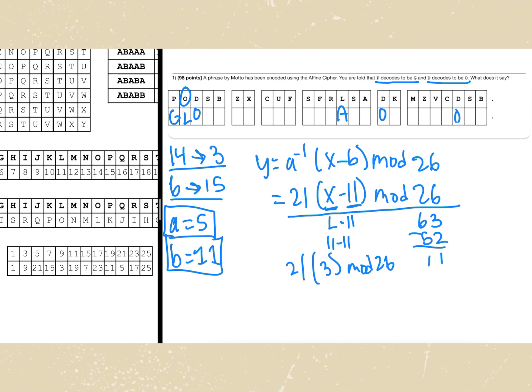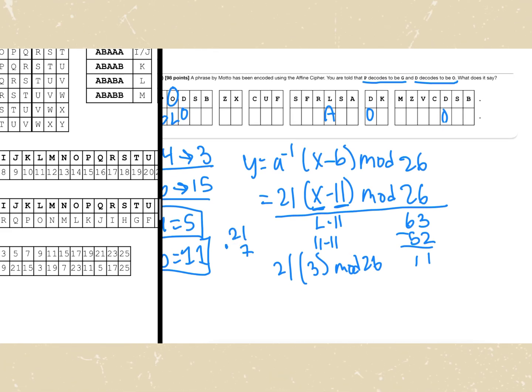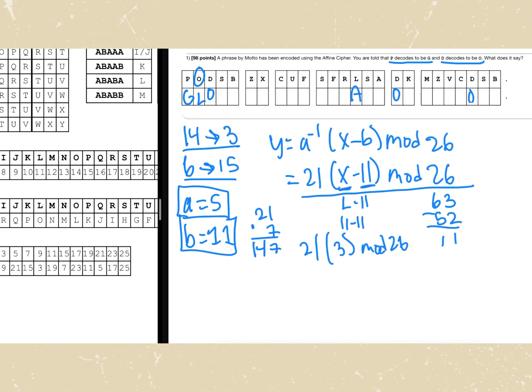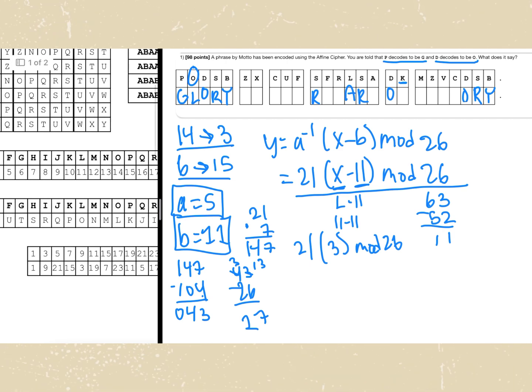Next is s. So we're going to have s to 18. 18 minus 11 is 7. So we're going to have 21 times 7, which is 147. So 147 minus 104 gives us 43 minus 26 is equal to 17. 17 is r. So we have s going to r. And the last one looks like glory right here. Next we can solve for k. K is 10. So we're going to have 21 times negative 1 which is negative 21 plus 26 gives us 5. So k is going to go to f.